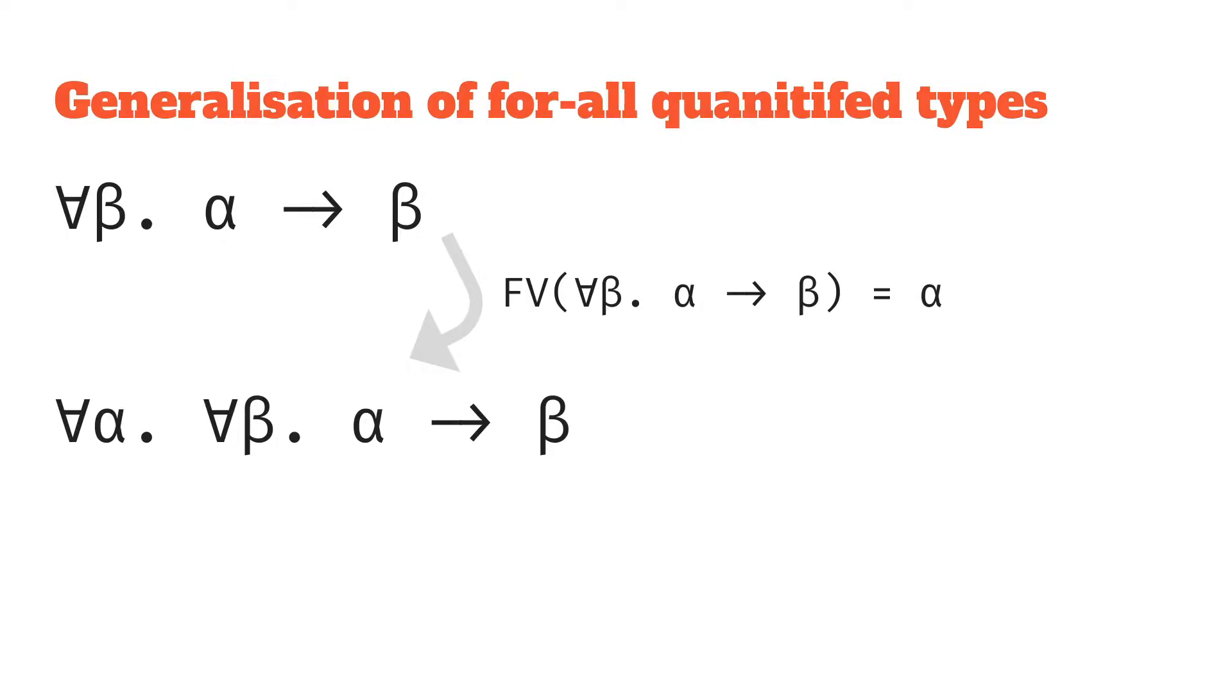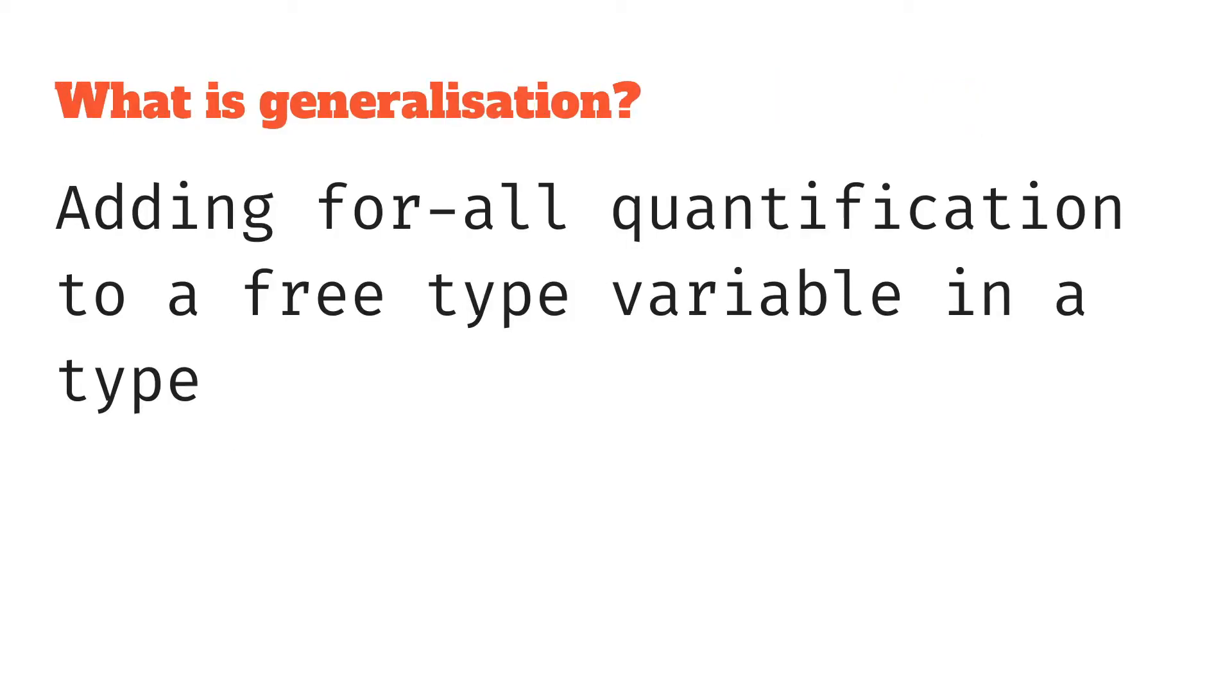We're going to use that knowledge and apply it to understanding generalization. So this is an example of generalization. In the first line we've got for all beta alpha to beta and we're generalizing that by taking the free variables, in this case just alpha, and slapping a for all quantifier in front with those free variables. Basically look at all the free variables and make them not free by binding them with for all quantifiers. That's generalization in a nutshell, adding for all quantification to a free type variable in a type.